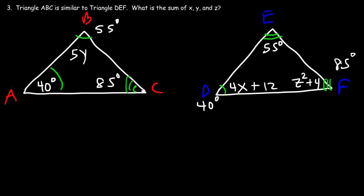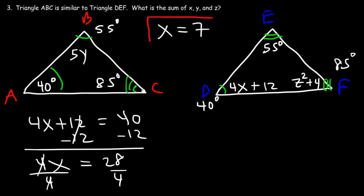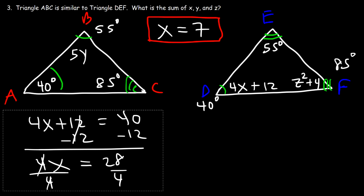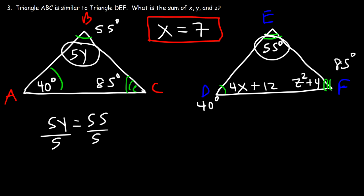Now we can solve for X, Y, and Z. For X: 4x plus 12 equals 40. Subtracting 12 from both sides gives 28, and dividing by 4 gives x equals 7. For Y: 5y equals 55. Dividing both sides by 5 gives y equals 11.